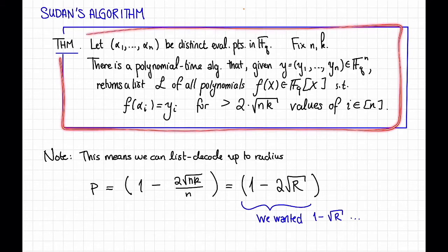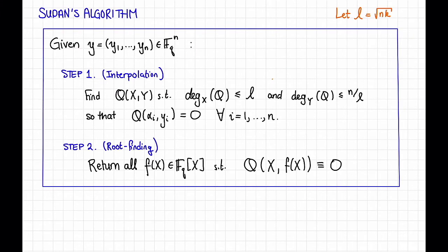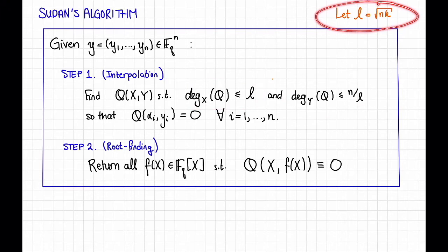Also, just note that since the algorithm runs in polynomial time, the list it outputs must have polynomial size as well — we'll see exactly what that list size is when we do the proof. So here's the algorithm. We're given as input some y in F_q to the n, and the algorithm has two steps, just like the bivariate version of the Berlekamp-Welch algorithm. Step one, the interpolation step: find a bivariate polynomial q(x,y) so that the x-degree of q is at most l and the y-degree of q is at most n over l, where l is a parameter I'm going to set equal to the square root of nk. We also want q(alpha_i, y_i) equal to 0 for all i from 1 to n.